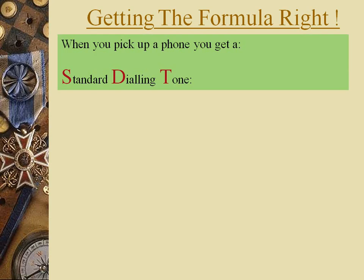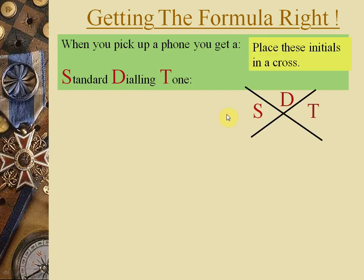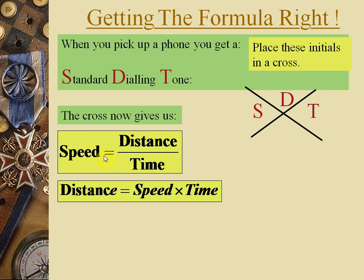Moving on to speed. The formula is Speed = Distance ÷ Time. You can memorize this using the mnemonic 'SDT' — Standard Dialing Tone. We have three quantities: S for speed, D for distance, and T for time. Speed equals distance per unit time — how much distance is covered in a given time.